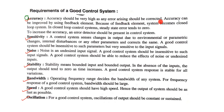First, accuracy — accuracy should be very high, as any error arising should be corrected. Accuracy can be improved by using a feedback element, which makes the system a closed loop system. In a closed loop control system, steady state error tends to zero to increase accuracy. An error detector should be present in the control system so that we can get a stable response and minimize error.